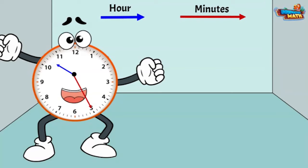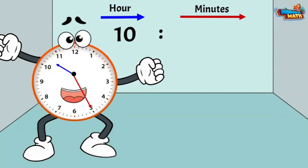We start by reading the hour. The hour hand is the shorter hand. It is between the number 10 and 11, which means it is 10 something. Now move to the long hand. Each group of tick marks equals 5.